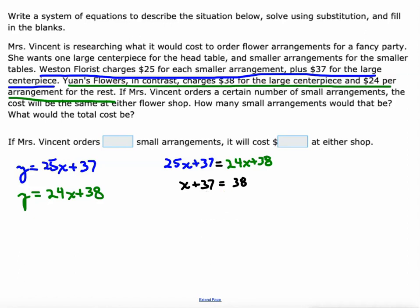And we get 1. Let's try that again. X equals 1. So if they order one small arrangement, it'll cost how much? We'll plug that 1 into this equation. So we'll go y equals 24 times 1 arrangement, because we're only buying 1 for 24 bucks, plus 38. Which obviously, 24 times 1 is 24, and when you add 24 to 38, you get 62. As in $62 at either shop. And even if you plugged 1 into the blue equation, you'd still get $62.